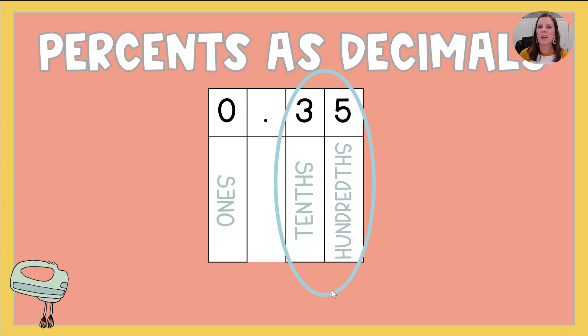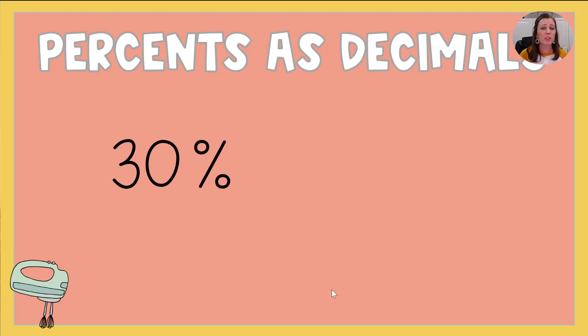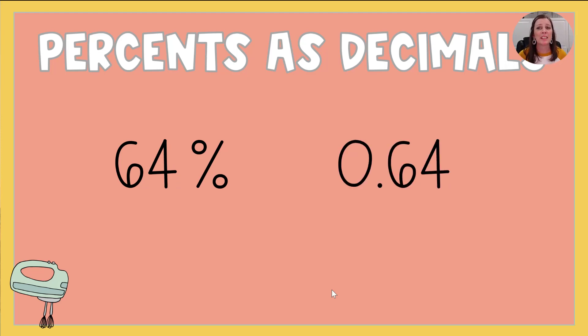Sometimes we'll have it in the ones, but not always. So 30%, if I want two places after the decimal, I take 30, I divide by 100. It's 0.30. Now you can say 0.3 because remember we said 3 tenths and 30 hundredths are equivalent. We can simplify 30 hundredths down to 3 tenths. 64% would be 0.64. It's kind of like you have an imaginary decimal right here where my mouse is. And we're just going to move it back two places because we're dividing by 100. And 100 has two zeros.